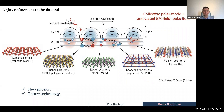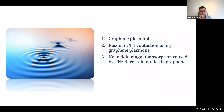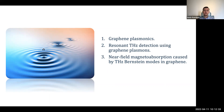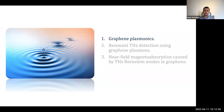Today I'll tell you two stories about the first type of polaritons — plasmons in graphene. I'll give you an overview of graphene plasmonics from the historical point of view. Then I'll talk about using plasmons to resonantly detect terahertz radiation and perhaps amplify signals. Finally, I'll tell you a very recent story about near-field magnetoabsorption caused by terahertz Bernstein modes in graphene — a hybrid quasiparticle existing in graphene in the presence of a magnetic field.